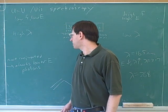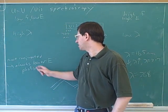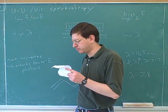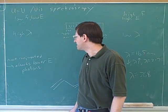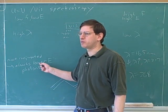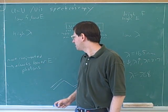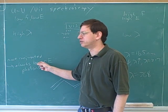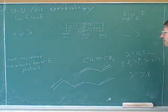By the way, it's possible to explain why more conjugation gives you lower energy photons by using molecular orbitals. And your instructor actually spent a bunch of slides doing that. But I'm going to take a guess that that's not going to be on the exam. So we won't go over using molecular orbitals to explain why more conjugation means that you absorb at lower energies. We'll just memorize that fact.